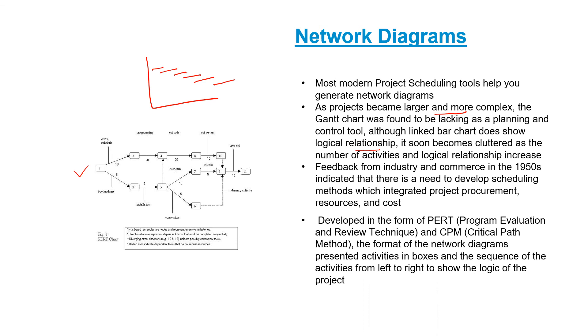Feedback from the industry and commerce in the 1950s indicated that there is a need to develop scheduling methods which integrated project procurement resources and cost. And this saw emergence of a use of critical path scheduling and it was developed in the form of program evaluation and review techniques and critical path method. The format of the network diagrams presented activities in boxes and the sequence of the activities from left to right to show the logic of the project.